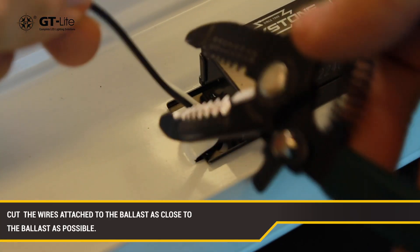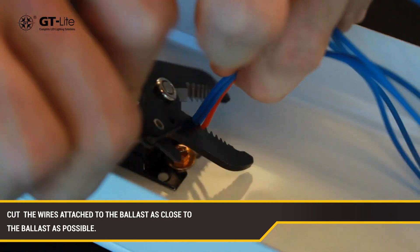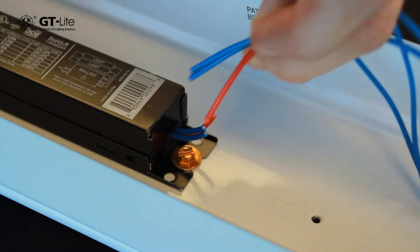Disconnect all the wires attached to the ballast as closely as you can to the ballast. It is best practice to leave the ballast in place after having disconnected the wires. Take note of the hot and neutral wires that are coming into the fixture.